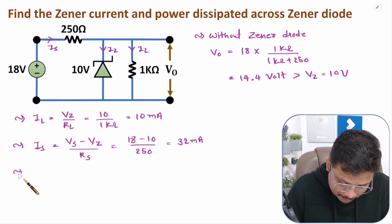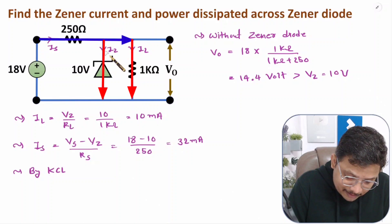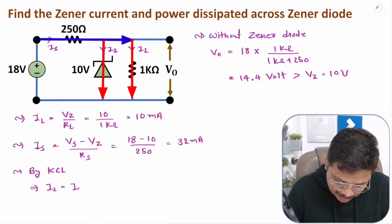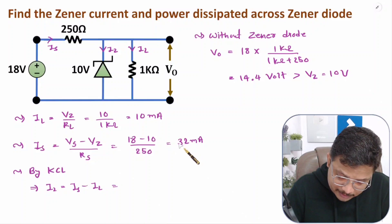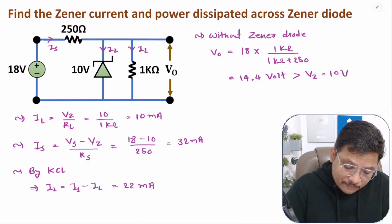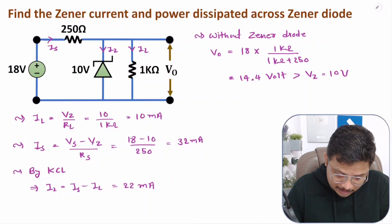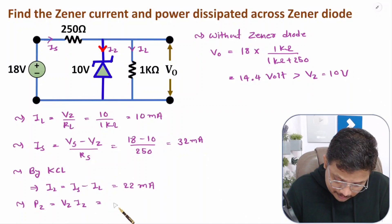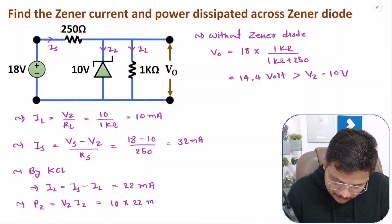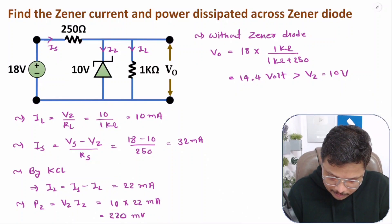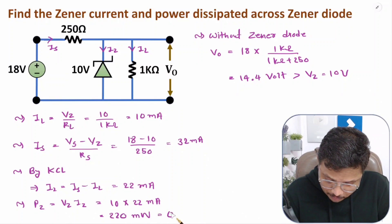Once you have IL and IS, by KCL you can find Iz. Iz equals IS minus IL equals 32 minus 10 equals 22 milliamperes. Now to calculate power dissipated across the Zener diode: Pz equals Vz times Iz equals 10 times 22 milli equals 220 milliwatts, which is 0.22 watts.